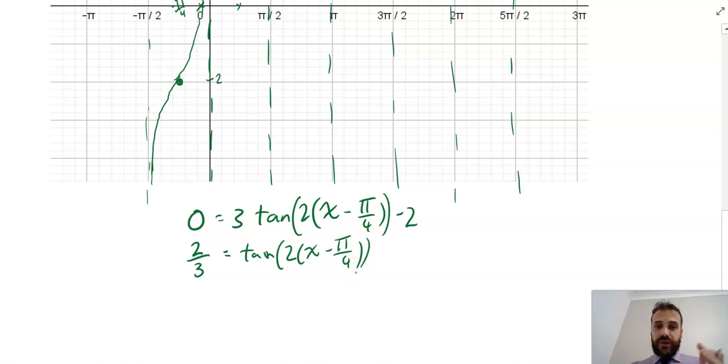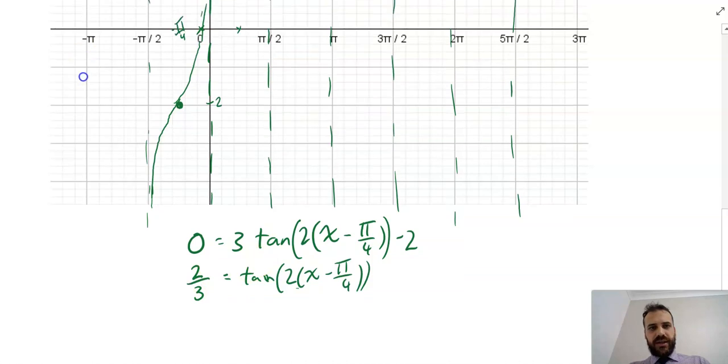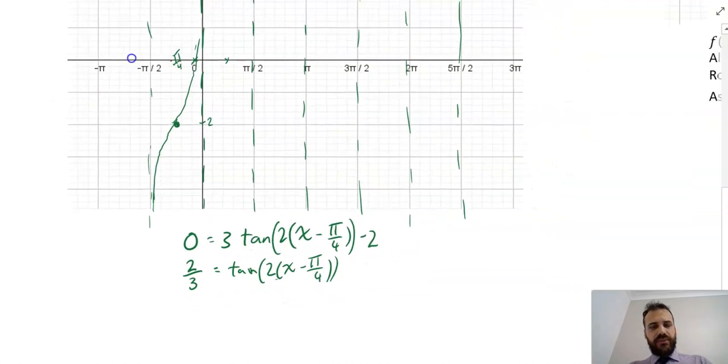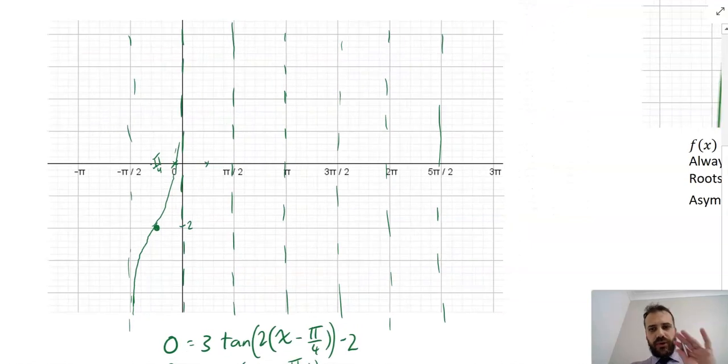We don't have a nice neat way to solve tan(θ) equals 2/3. We'd have to pull out our calculator for that. So in terms of sketching these tan functions, I'm not going to pull my calculator out to solve that. If I had my calculator, I'd just be sketching the thing anyway. So I'm not going to find that root.